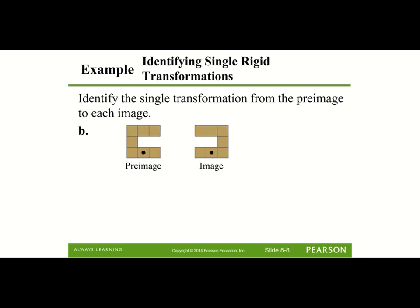When we look at this figure and go from the pre-image to the image, the dot is still in the same position, but the orientation of the figure changed. This one is opening up to the right, while the image is opening up to the left. So this is almost like there's a line of reflection — this would be a reflection or a flip.